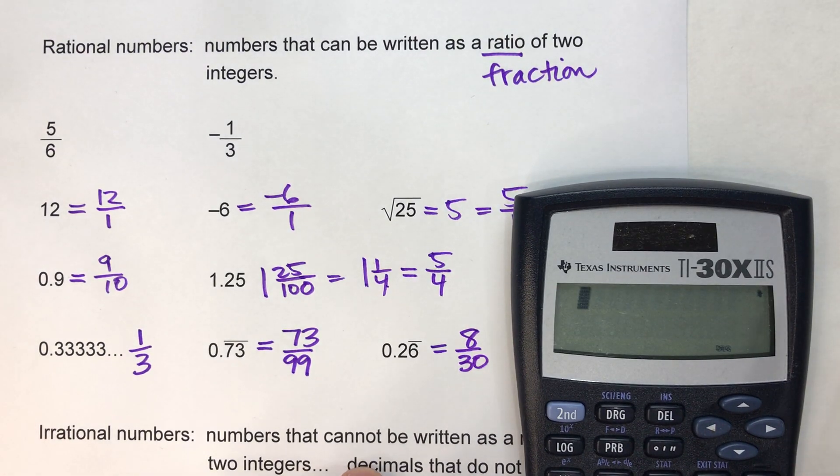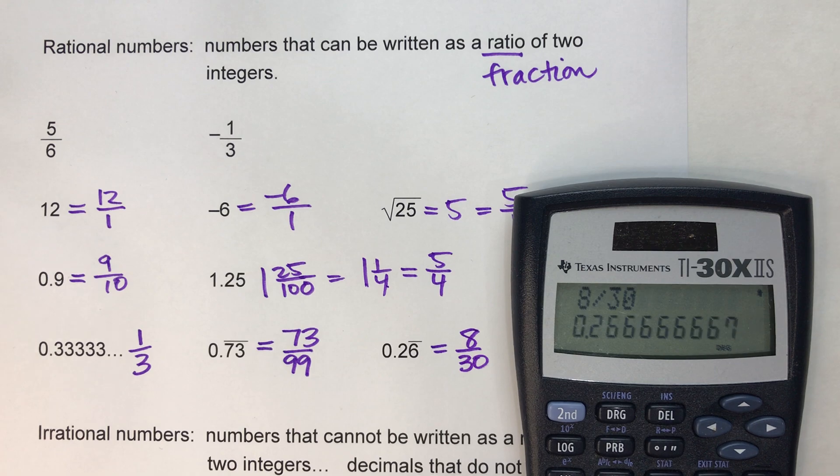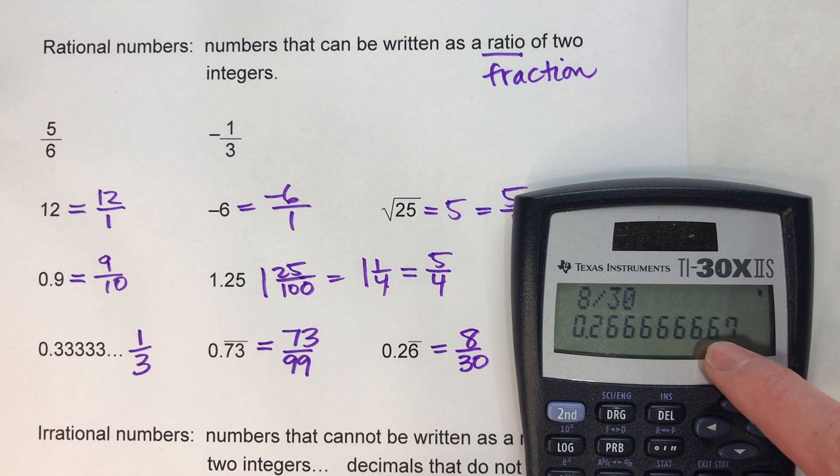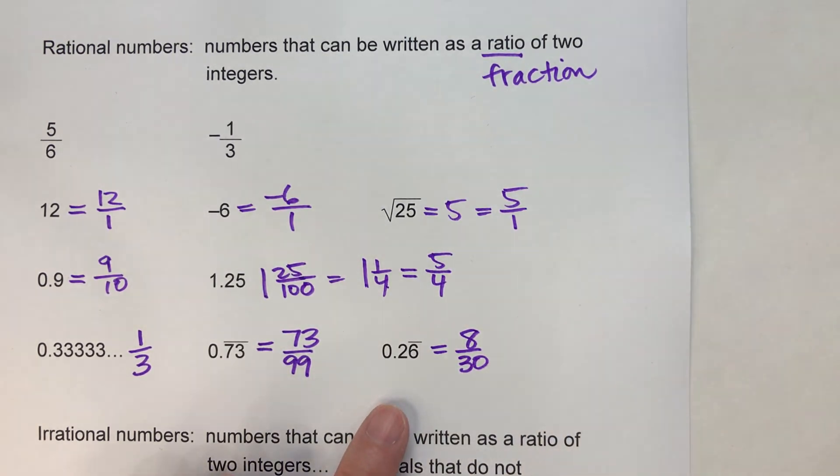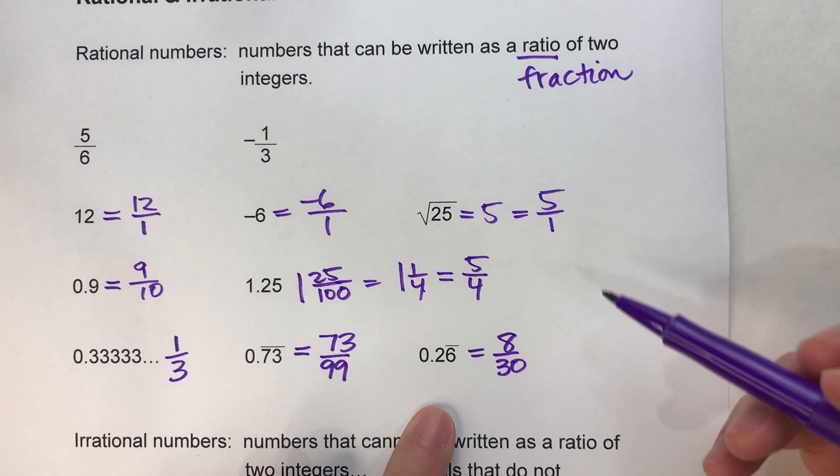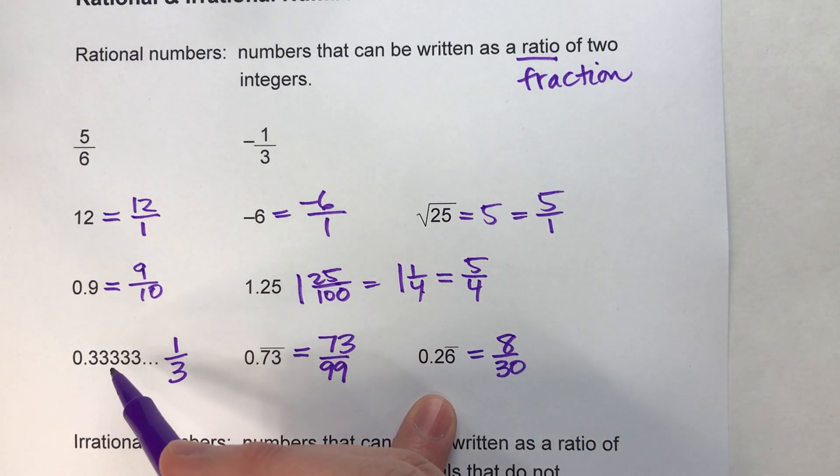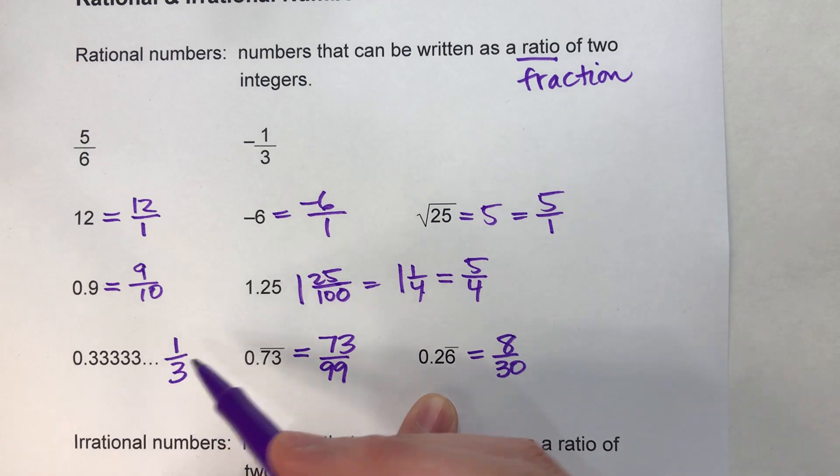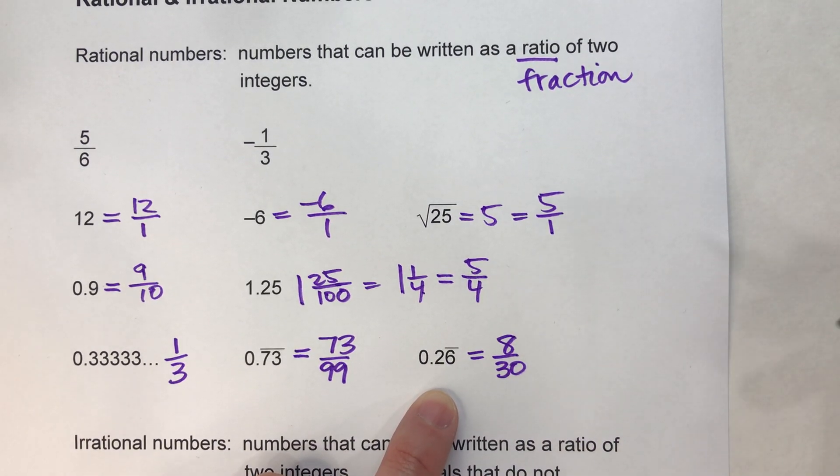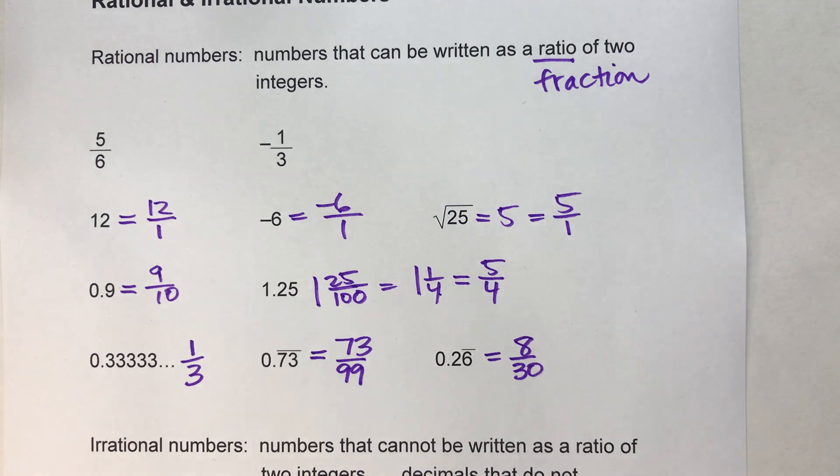Again, if you don't believe me, here you go: 8/30 equals 0.2666... So if I can write it as a fraction, just like I did with all of these repeating decimals—and all repeating decimals can be written as a fraction—then they are rational.